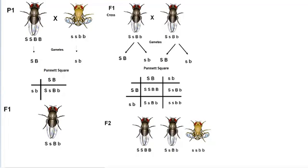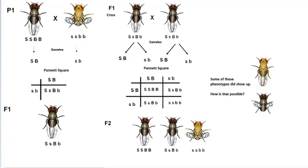Now in the actual experiment that Morgan and his students ran, they got some new phenotypes in the F2 generation. Some had straight wings and gray bodies, and a few had curly wings and black bodies. These variations are very different from the P1 and F1 generations.